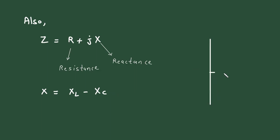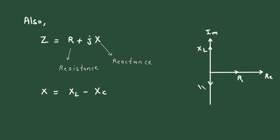Here we can see in this graph: the horizontal axis represents the real axis and the vertical axis represents the imaginary axis. The resistance will be on the horizontal or real axis. The inductive reactance XL will be on the positive imaginary axis, and the capacitive reactance XC will be on the negative imaginary axis. The net reactance X is equal to XL minus XC, shown on the imaginary axis.